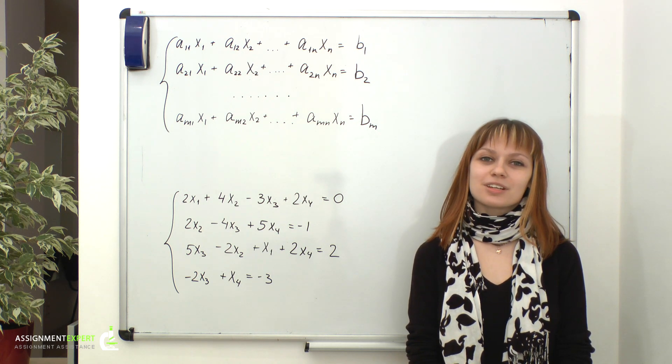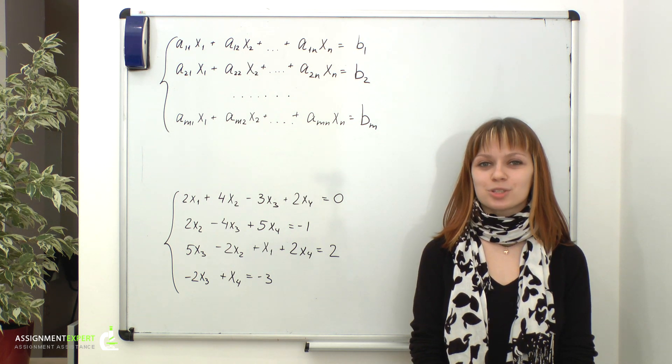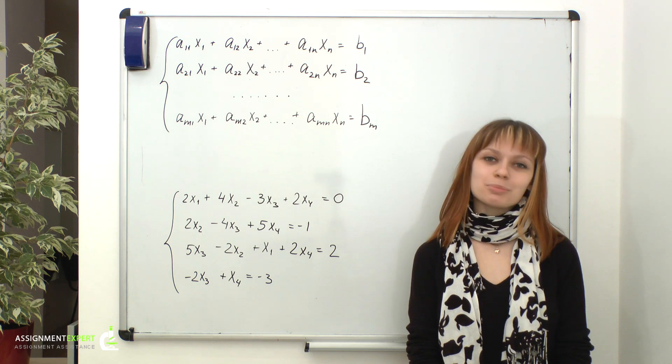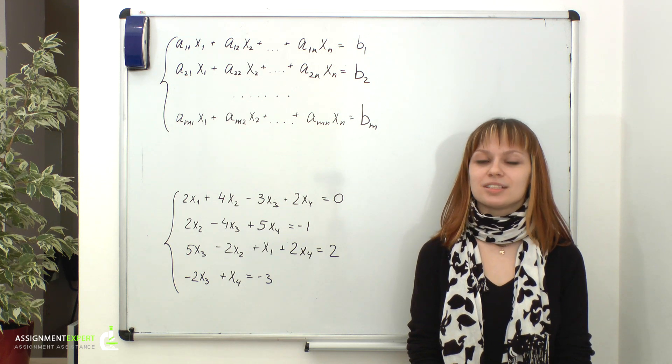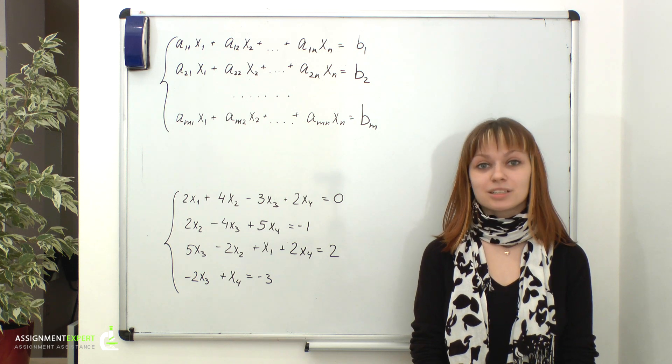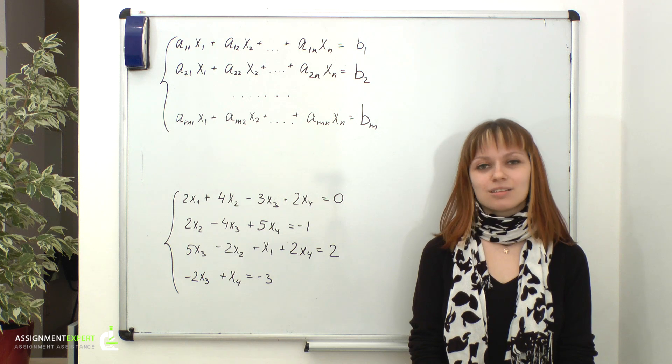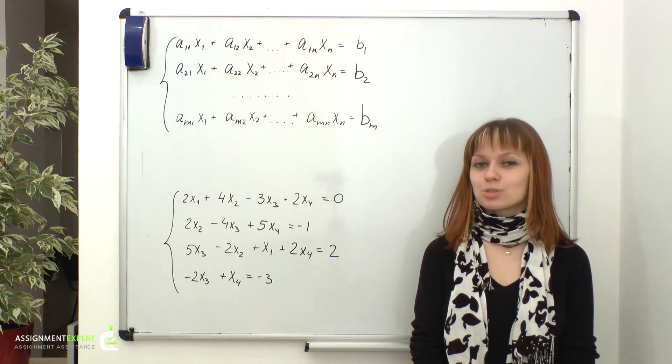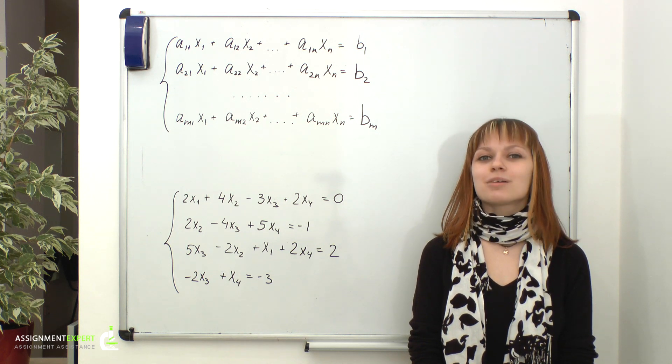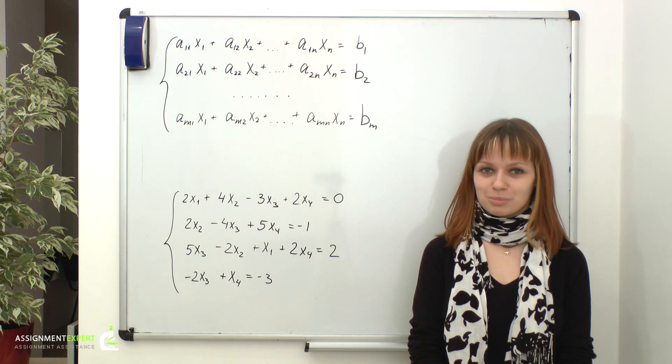In our very first video, we discussed that a system of linear equations may be solved using Cramer's rule. As you may remember, Cramer's rule involves finding determinants, and that might get tricky when dealing with systems of 4, 5 or more equations. Luckily, there is another method which allows us to avoid massive calculations, and that is called Gaussian elimination or row-reduction method.